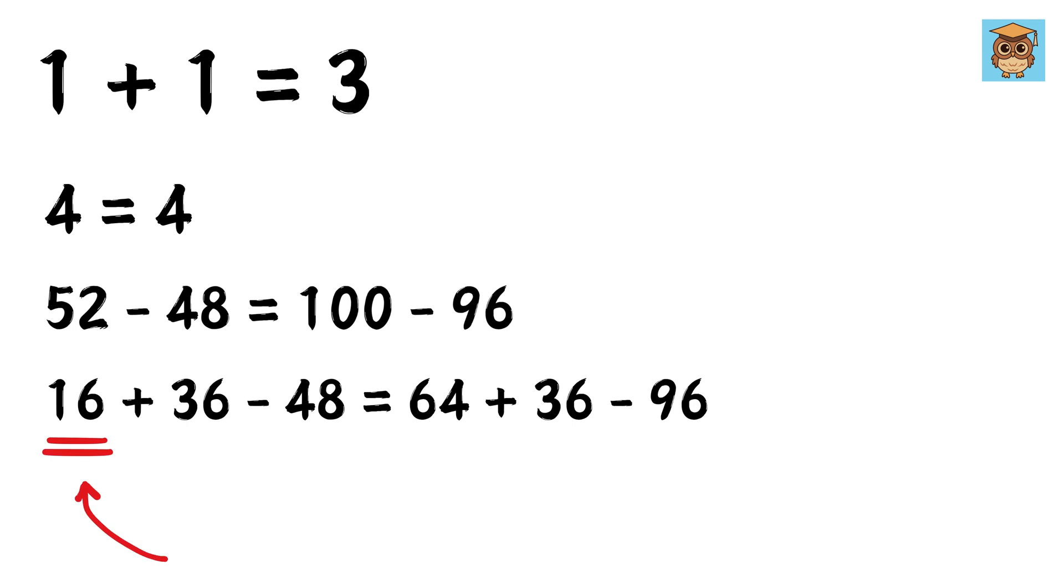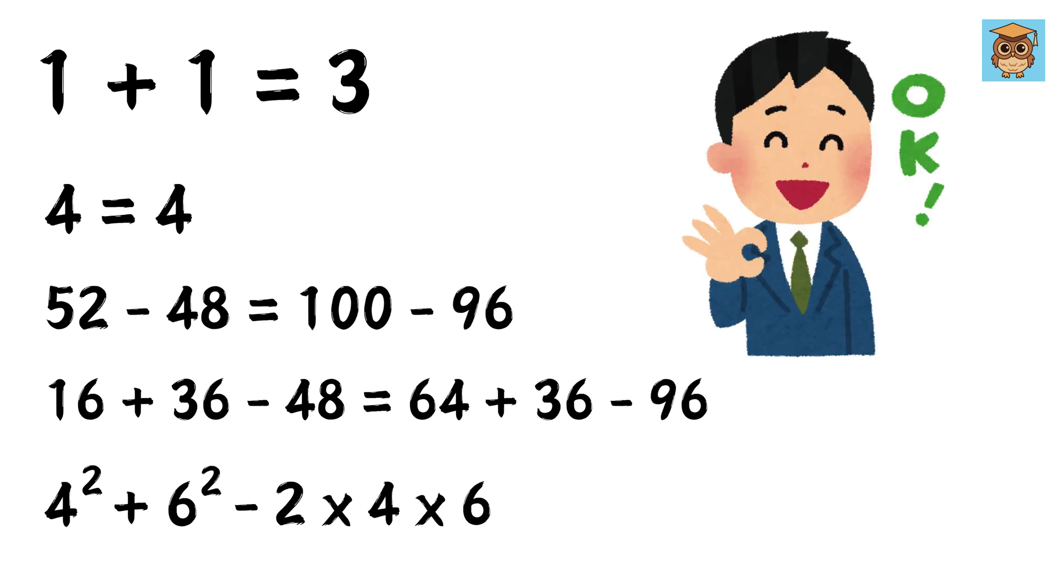Next we will write this 16 as 4 square, then 36 as 6 square, and this 48 we can write as 2 times 4 times 6, right? We are still good.